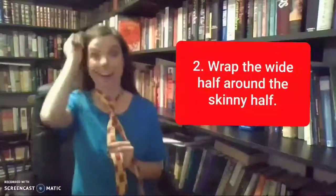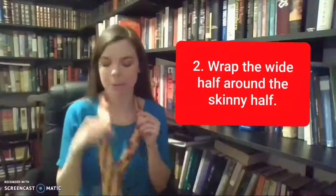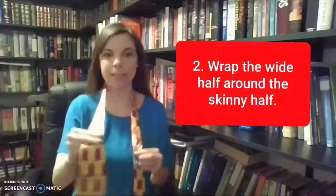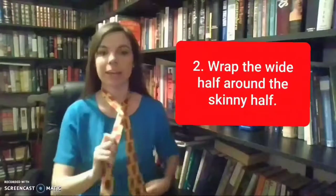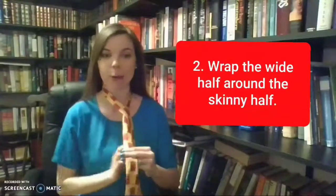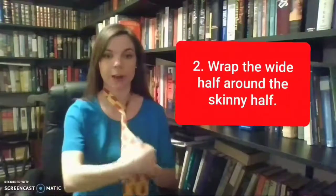So instead, one more time: I'm going to take the wide part of my tie, put it over the skinny, make sure it lays nice and flat, keep the skinny still, and I'm going to wrap the wide around the skinny so I have one, two loops.